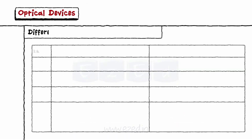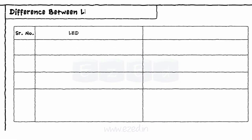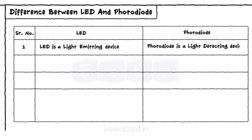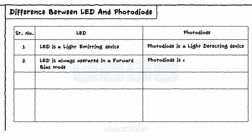Now let us see the difference between a LED and a photodiode. LED is a light emitting device whereas photodiode is a light detecting device. LED is always operated in a forward bias mode whereas photodiode is always operated in a reverse bias mode.